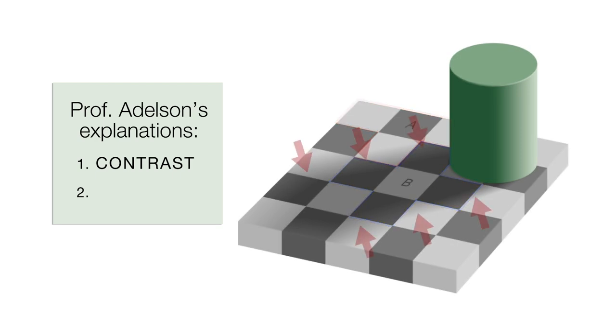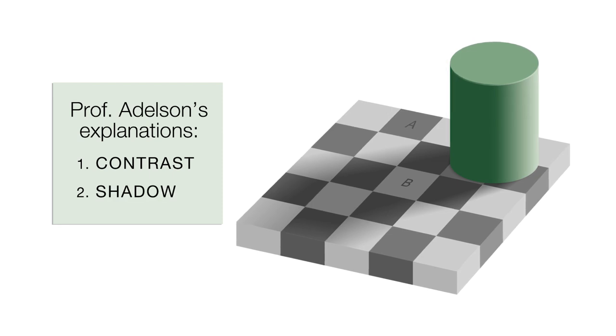Second, take a look at the soft edges of this darker section. Our brains see this and think, ah, it's a shadow. We know that objects in shadows look darker than they actually are. So our brains compensate for that by making us actually see B as lighter.